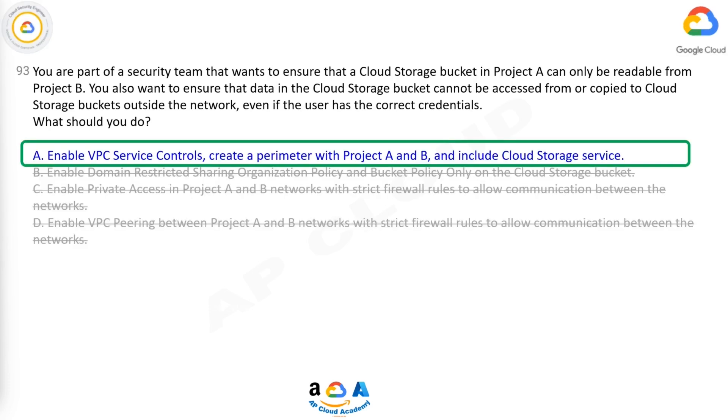Correct answer: A. Enable VPC service controls, create a perimeter with Project A and B, and include Cloud Storage service.